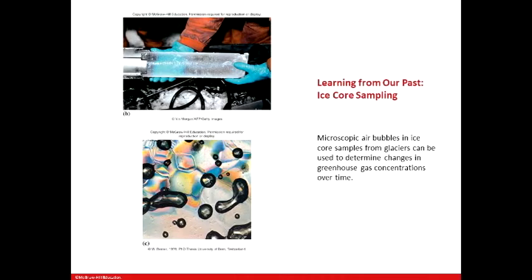They know because at the polar caps, the world is frozen, certainly frozen beneath the surface, and gases have been trapped in the polar caps — trapped in ice. What happens is they dig these core samples from there, and within these core samples, there are microscopic bubbles that contain the greenhouse gases.